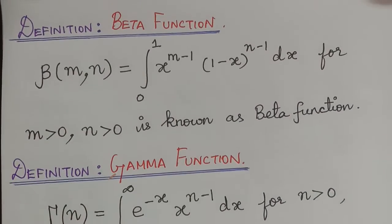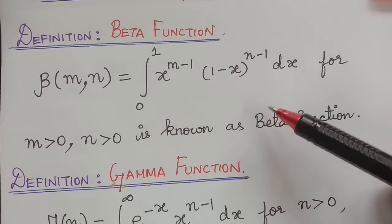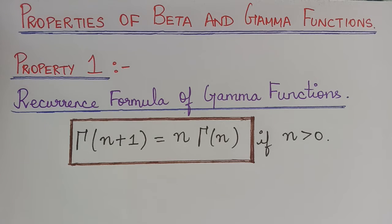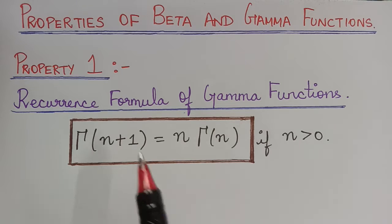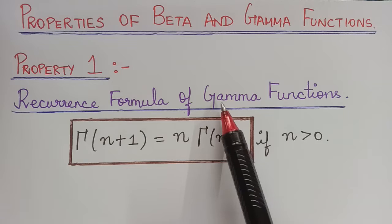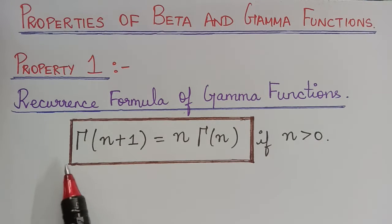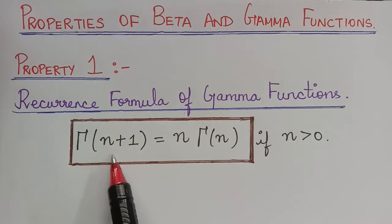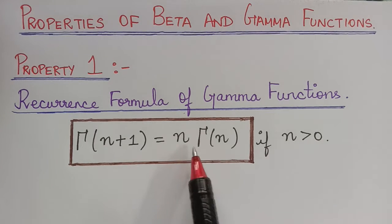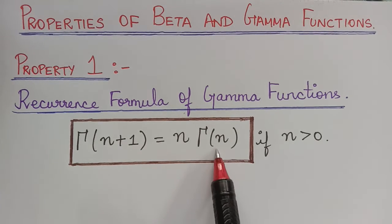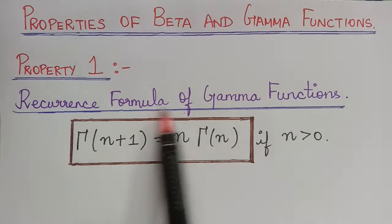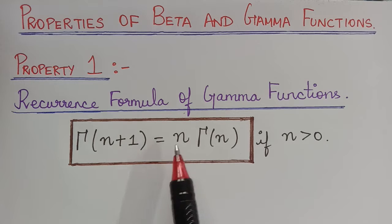We shall now learn some properties of beta and gamma functions. The first property is the recurrence formula of gamma functions. The recurrence formula for a gamma function is given by: gamma of n plus 1 is equal to n multiplied with gamma of n, for all n greater than 0. This is known as the recurrence formula of a gamma function.